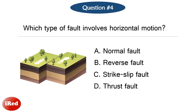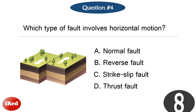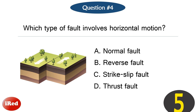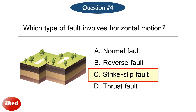Question number four. Which type of fault involves horizontal motion? The correct answer is letter C: strike-slip fault.